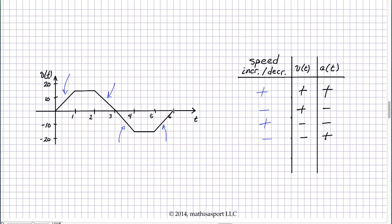Another way to think about this, if you like the graphical approach, is the issue of whether the speed is increasing or decreasing can be determined by whether you're moving away from the horizontal axis or towards the horizontal axis. When you're moving away from the horizontal axis, the speed is increasing. When you're moving towards the horizontal axis, the speed is decreasing.